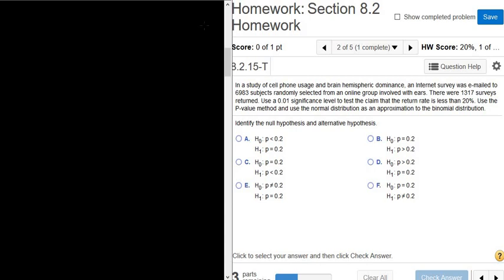Use a .01 significance level, that's going to be our alpha. So whenever you see the words significance level or level of significance, you know that's alpha. To test the claim that the return rate is less than 20%. In this problem we're dealing with proportions, so we have to figure out n and x. So n is the total number of observations and x is the total number of successes. It looks like we have 6,983 observations and 1,317 surveys.